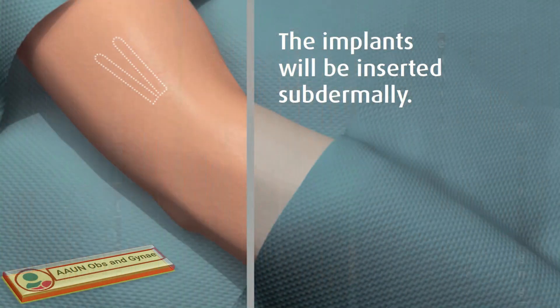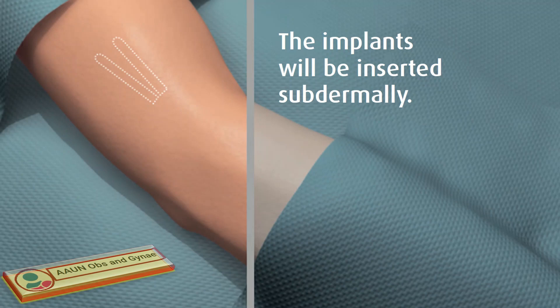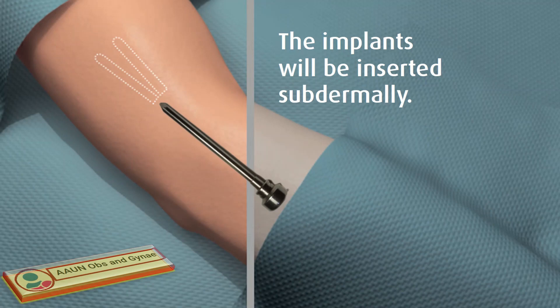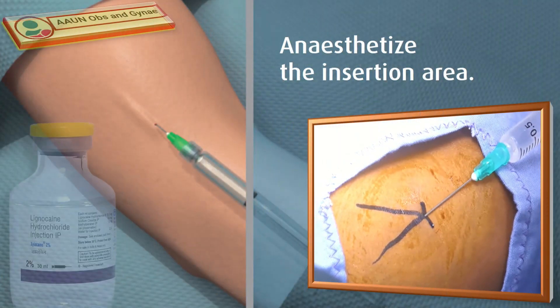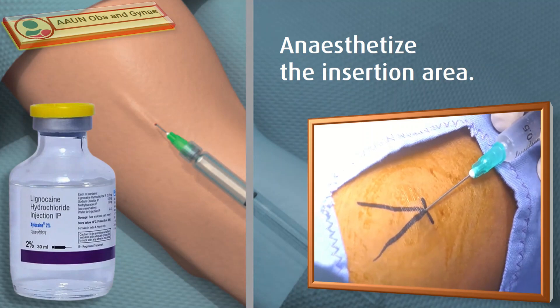Ask the patient to lie down on the examination table with her non-dominant arm extended on sterile cloths on the other table at a right angle to her body. The implant will be inserted subdermally through a small incision using a disposable trocar in the shape of a narrow V opening towards the armpit. First, determine the absence of known allergies to the anesthetic agent or related drugs.